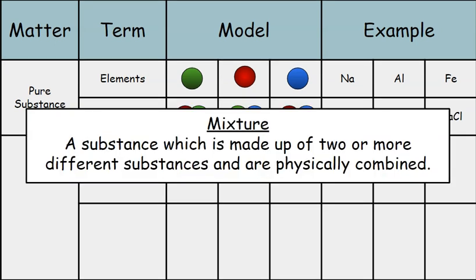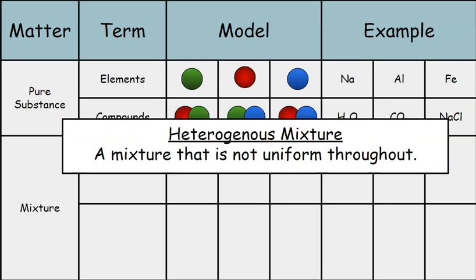The next category we need to discuss are mixtures. Mixtures are a substance which is made up of two or more different substances and are physically combined. And there are two types of mixtures we need to discuss. The first one is heterogeneous mixture.